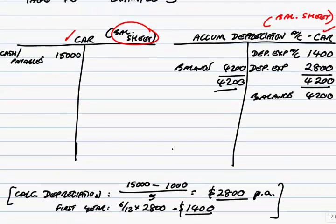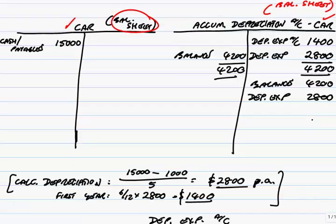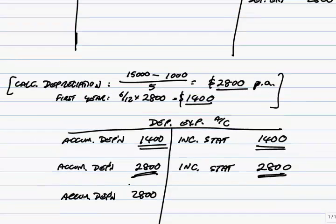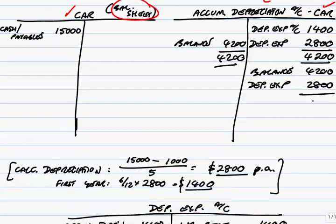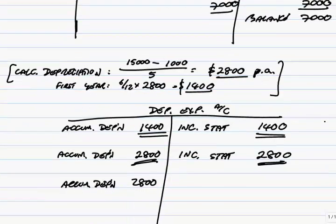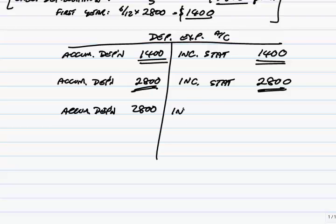Finally, the third year. We've done the arithmetic, so the depreciation is another 2,800. At the end of the third year, credit the accumulated account, debit the expense account. The entry is always the same. Close off the accounts — the car appears on the balance sheet, leave the balance there. Accumulated depreciation is now 7,000. It'll appear on the balance sheet, so leave the balance there. The expense account moves to the income statement as the total expense for the year.